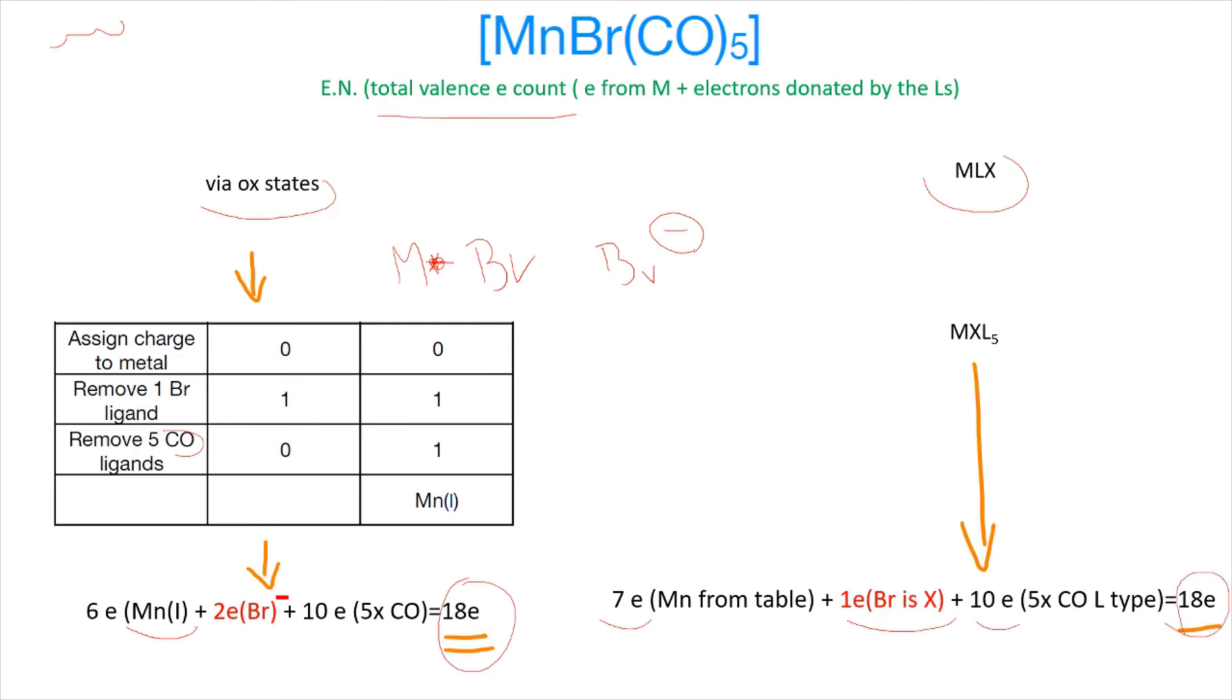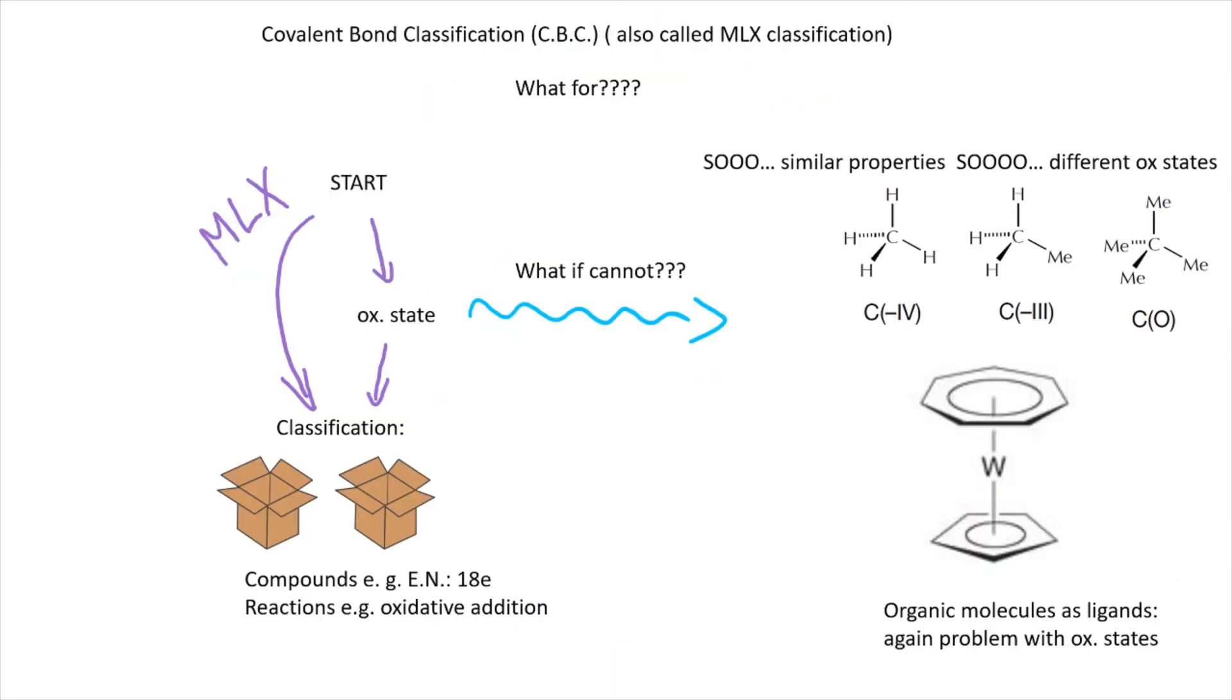99% you will get the same answers from both methods. There's something like MnO4 minus that will give you a different number, but that's for a different video. Please don't confuse yourself. The MLX classification was developed to omit oxidation states, because sometimes oxidation states are just not useful. For instance, we have methane, ethane, and silane, very similar molecules, but the oxidation state jumps from minus four to minus three to zero. They should be similar in principle because these molecules have similar properties. That's why organic chemists don't use oxidation states. If you take an organic molecule and stick it on the metal as a ligand, you will have problems with oxidation states. MLX just allows you to omit that.